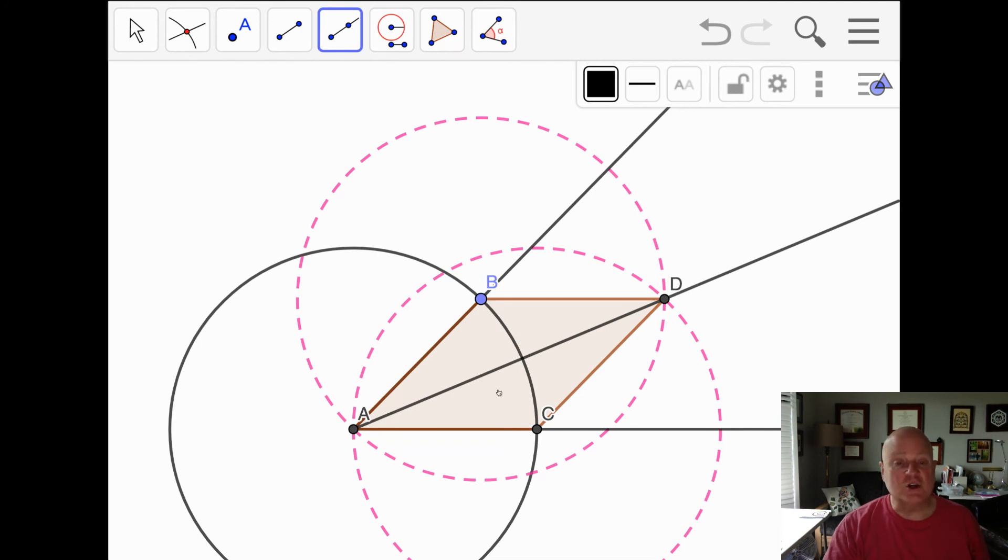So these two triangles are congruent. That is, they have the same shape and size. It means that you can map triangle ABD onto triangle ACD by reflection.